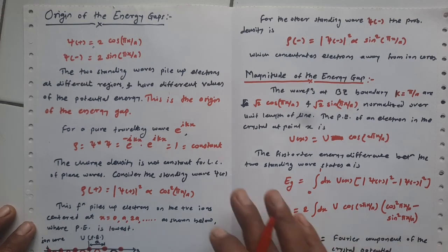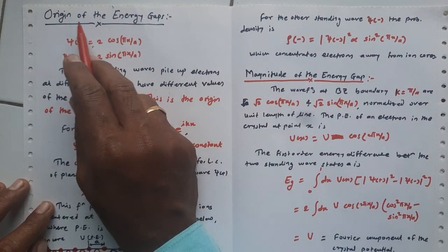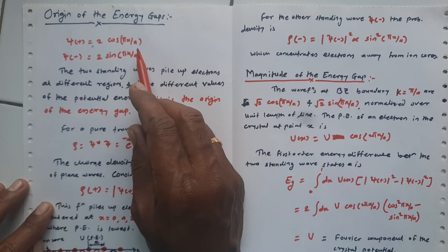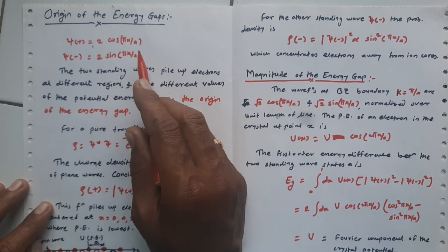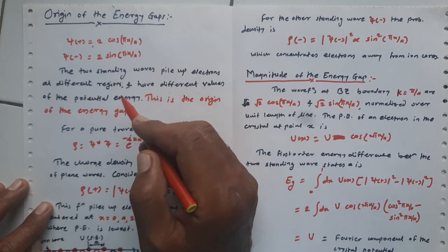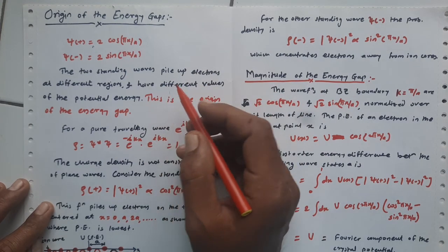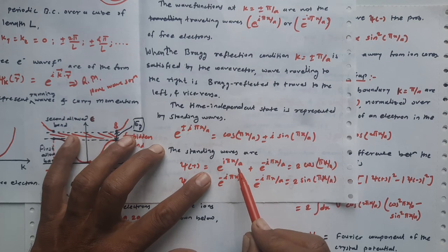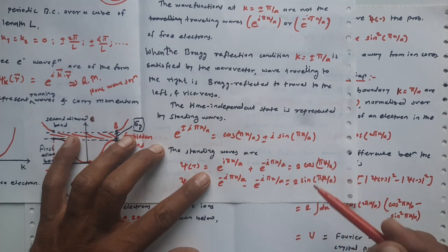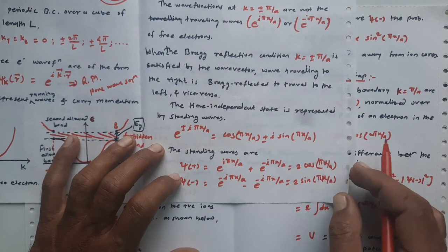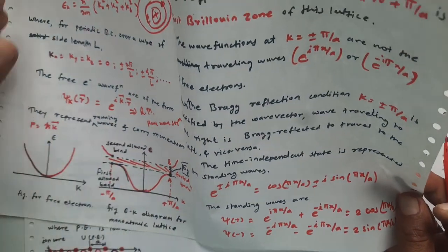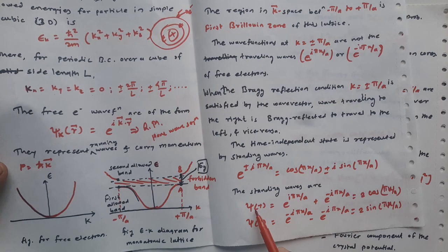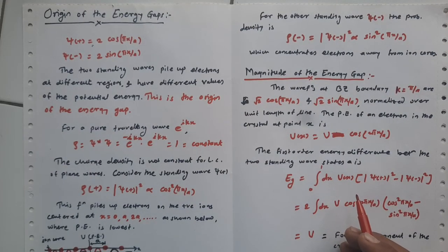Hello friends, in continuation with the last lecture, we are going to talk about the origin of energy gaps in materials. At the end of the last lecture, we talked about the time-independent states represented by standing waves. The two different forms of standing waves from the traveling wave solutions are: ψ+ equals e^(iπx/a) plus e^(-iπx/a), which is two times cos(πx/a), and similarly ψ-. These are the standing waves going towards the right and left depending upon the sign.